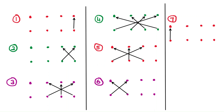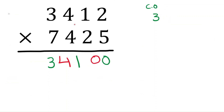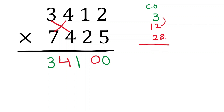Step six: hundreds with thousands. Three times four is twelve, and seven times four is twenty-eight. Adding: five plus eight is thirteen, then forty-three. Write three in the answer. Four will be the carryover.